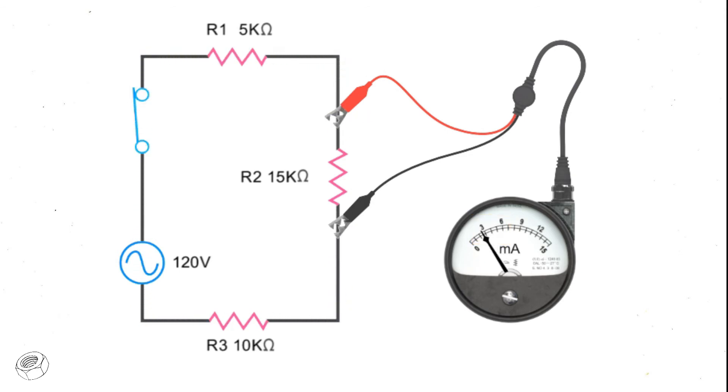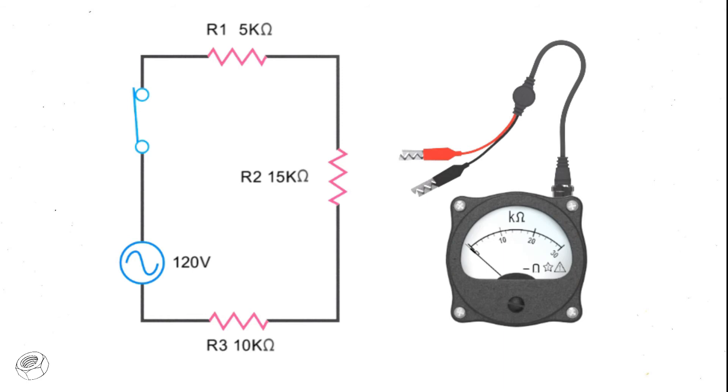To measure resistance of a circuit component, an ohmmeter is used. Like a voltmeter, an ohmmeter is connected in parallel with the component to be measured.